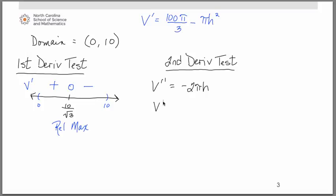We're going to evaluate that second derivative at the critical number we obtained. Now because of the nature of the second derivative, -2 times π times this h value, that is going to obviously yield a negative answer.